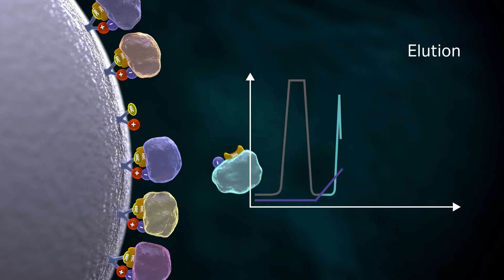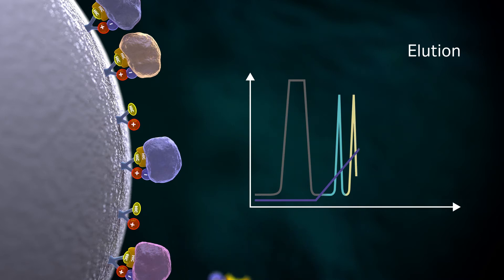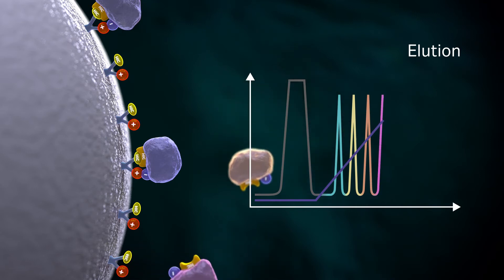In the third elution step, the target molecule is released from the stationary phase by a change in the buffer composition, for example, a change in pH. Sometimes the pH change is combined with an increase in salt concentration, and in some cases, elution is conducted by increasing salt concentration alone.